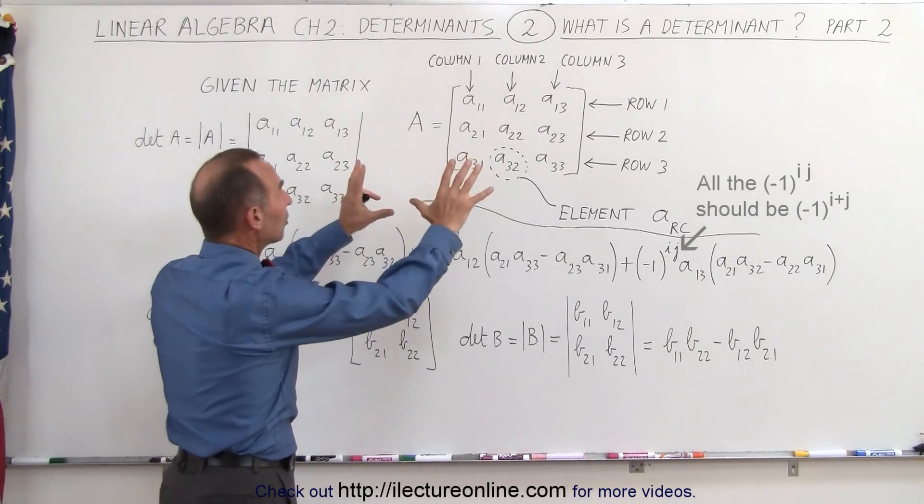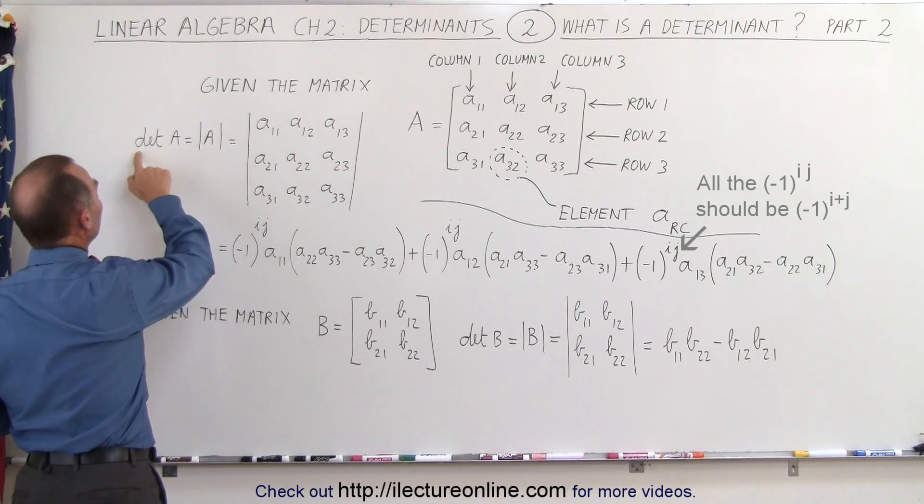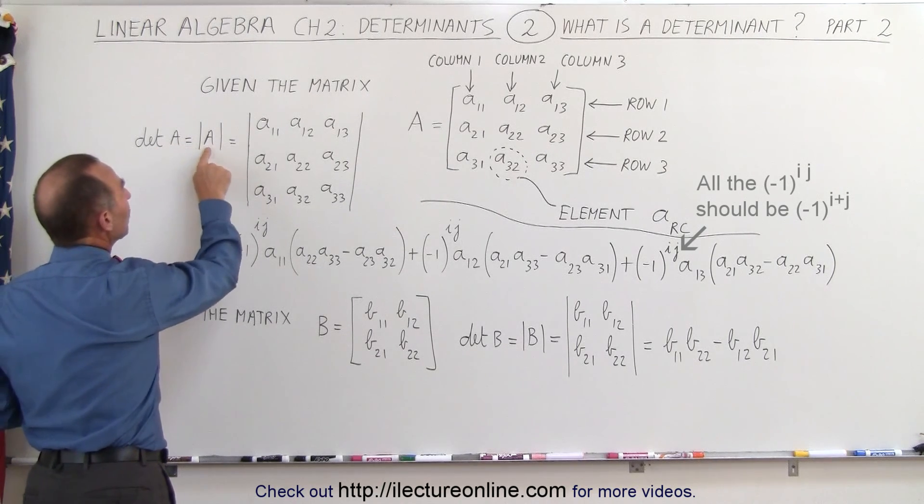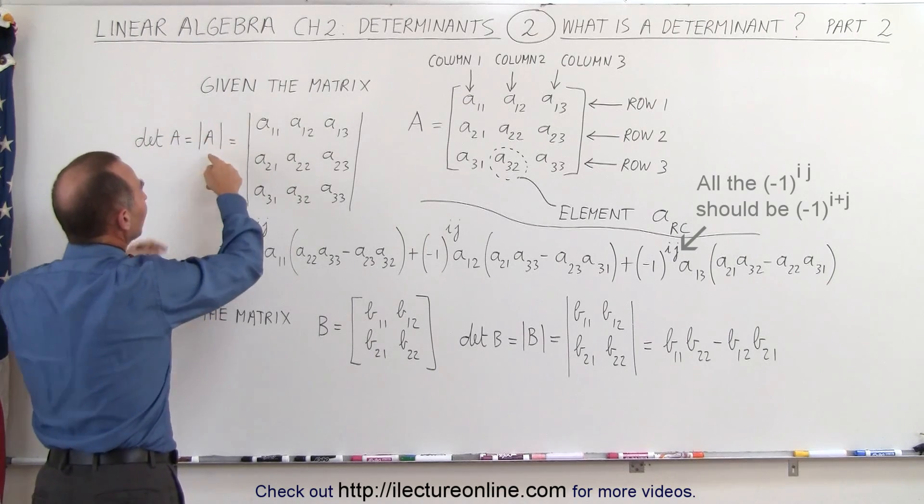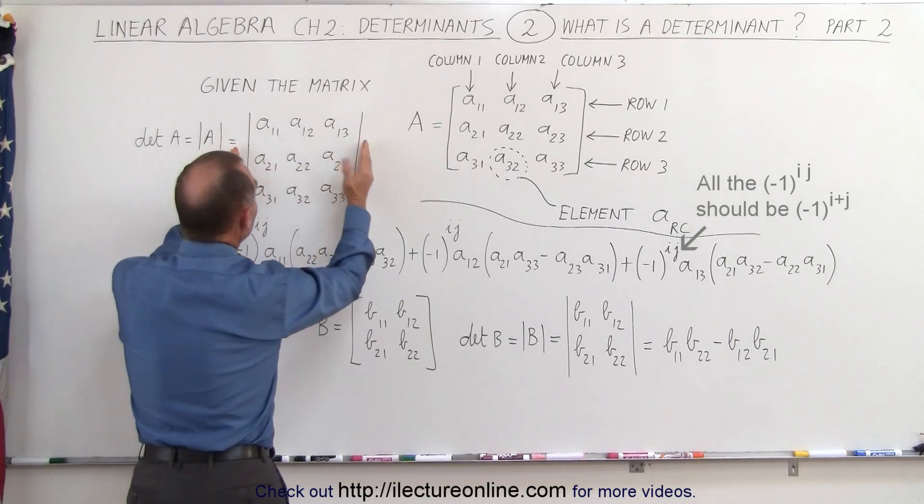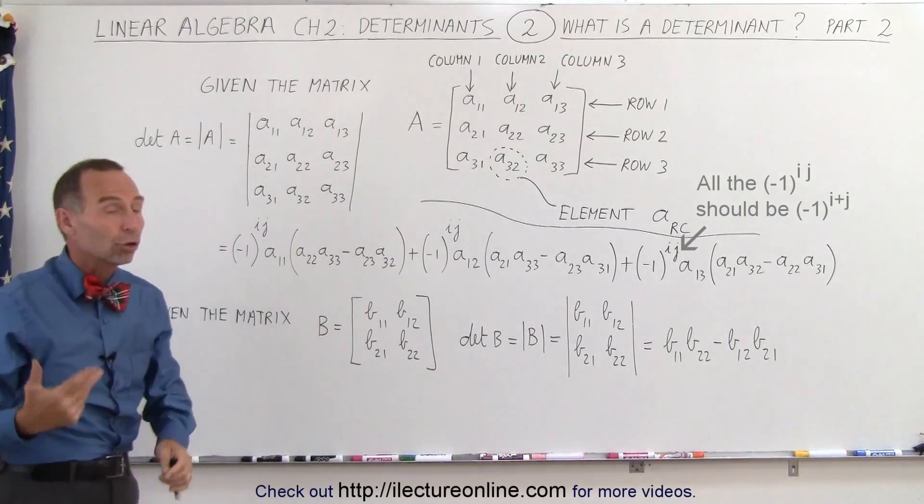So assuming that that's our matrix, this would be the determinant of that matrix. We write it as DET for determinant of the matrix A is equal to the matrix A with these lines like that. This is kind of like the absolute value symbols, it's also the lines that we use to hem in the elements of the matrix, which now become the elements of the determinant.